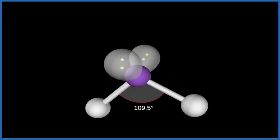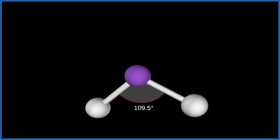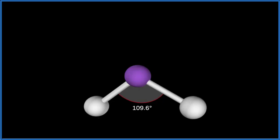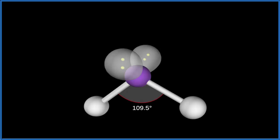If we hide the lone pairs — they're still there, but we hide them — you can see that it's bent and the bond angles should be about 109.5 degrees. But lone pairs push down more than atoms would, so they're going to push these a little closer together, probably about 105 degrees.